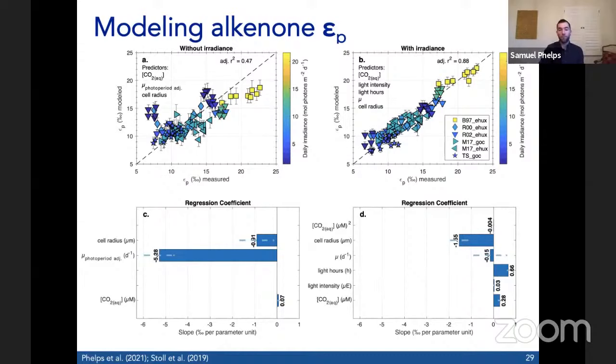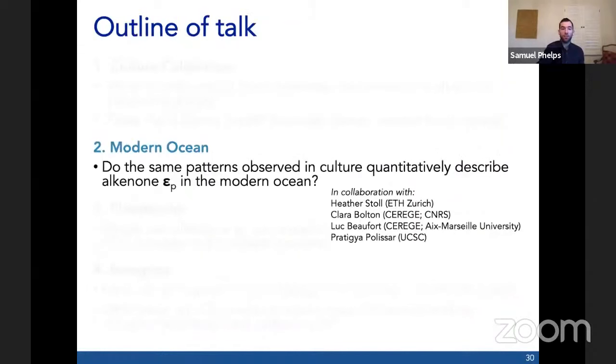To summarize the behavior of EP in culture experiments when we put these data together and look at the variables driving the variance in EP, it's different from what the traditional models suggested. A diffusive supply framework is not sufficient to explain the variance of EP in culture experiments where everything is tightly controlled. This is really just an extension of the work led by Heather Stoll in 2019. These predictors are slightly different from the model in that study. We'll take this next out of the laboratory and into the natural environment.